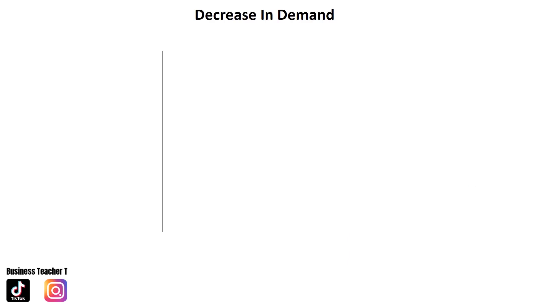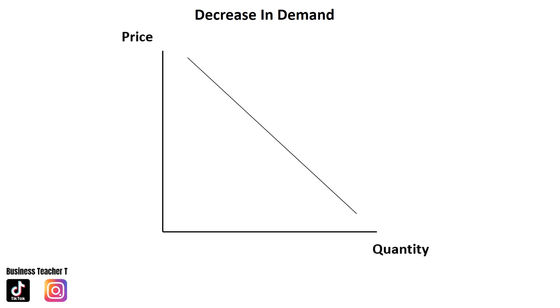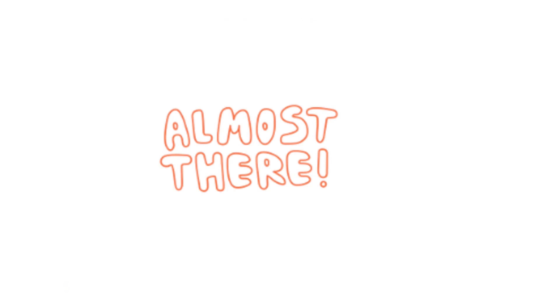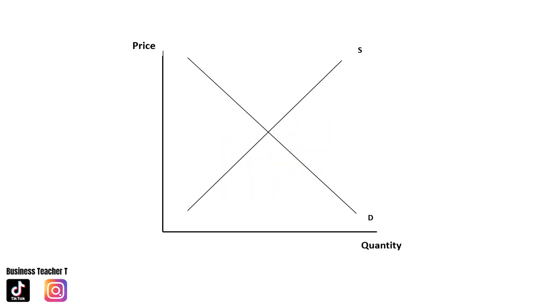Now let's show a decrease in demand. We start again by drawing our axes, labeling them price and quantity. Then we draw the demand curve labeled D and the supply curve labeled S. Next we draw our equilibrium and label it P1 and Q1 — that gives us two marks in a four-mark question. That's what I mean by starting off with an X and fully labeling it, ensuring we gain some marks even if our shift goes incorrectly.